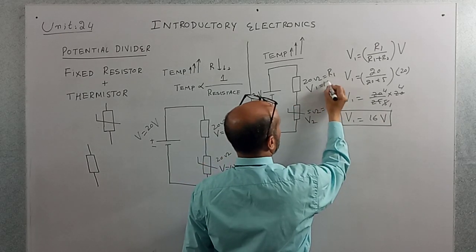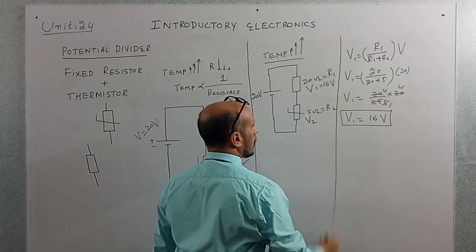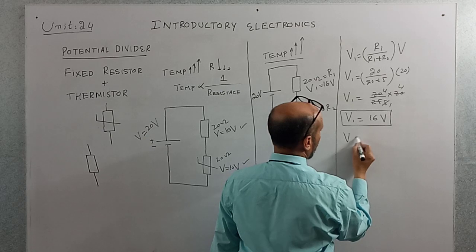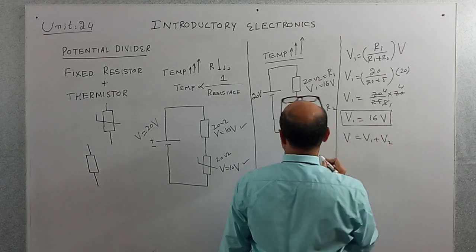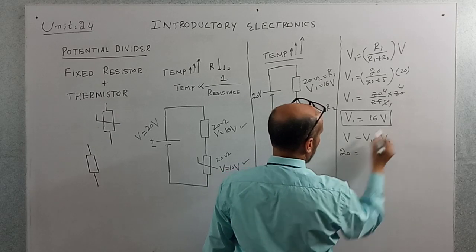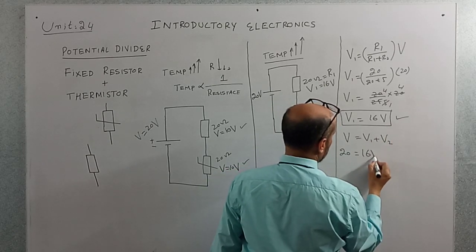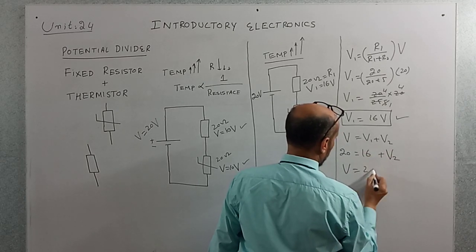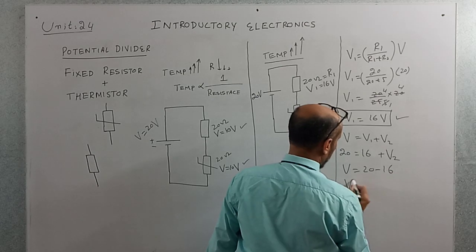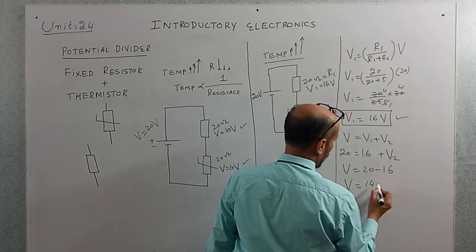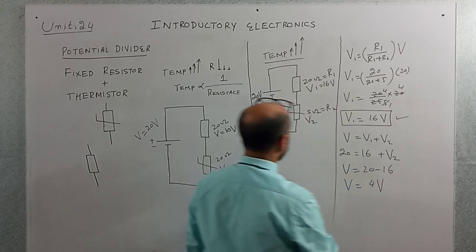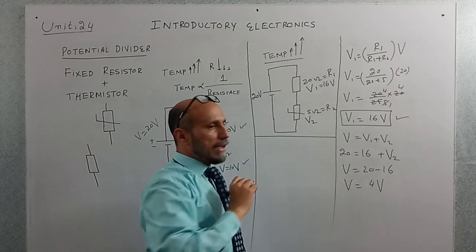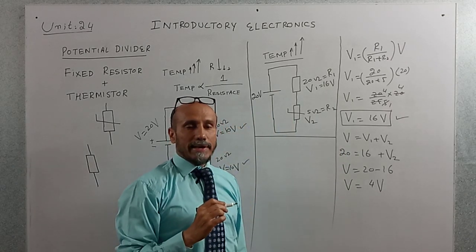So V1 equals 16 volts. Using the formula V = V1 + V2, the total voltage is 20 volts, so V2 = 20 − 16 = 4 volts. When temperature increases and thermistor resistance drops to 5 ohms, the voltage across the fixed resistor becomes 16 volts and the voltage across the thermistor becomes 4 volts.